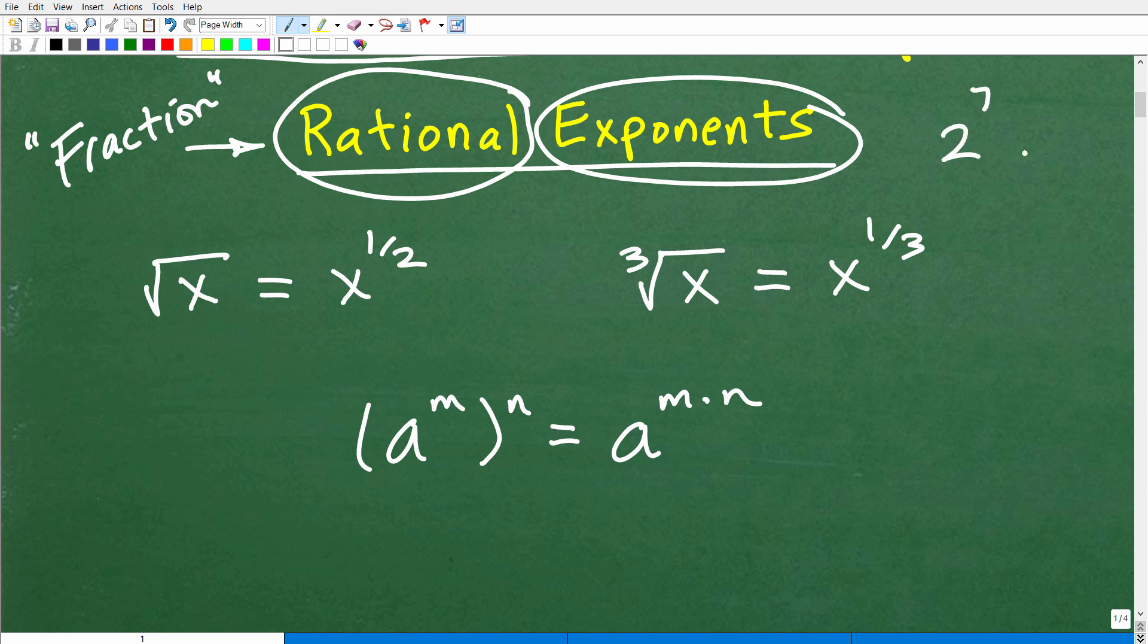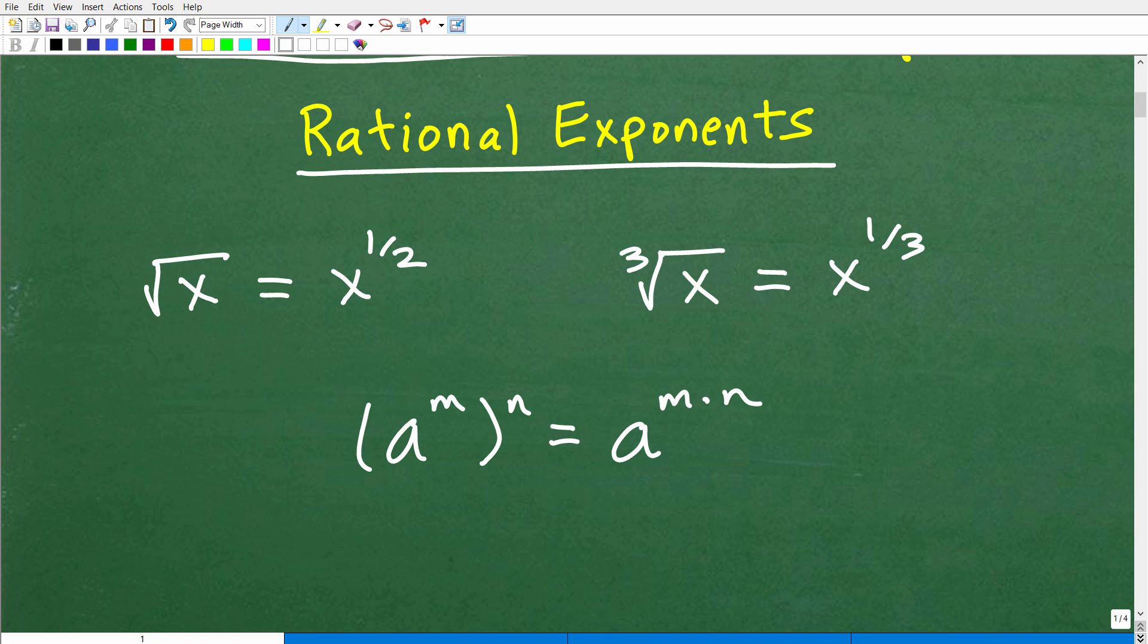Well, an exponent is what? Let's say we had two to the seventh power. Okay, this big number down here is called the base. This little number up here is called the exponent. Okay, this whole thing is the power. So this is an exponent. So we're talking about fractional exponents. So we're talking about things where the exponent, the little number up here is a fraction, something like two to the one half. So that's what rational exponents are and you need to understand them thoroughly.